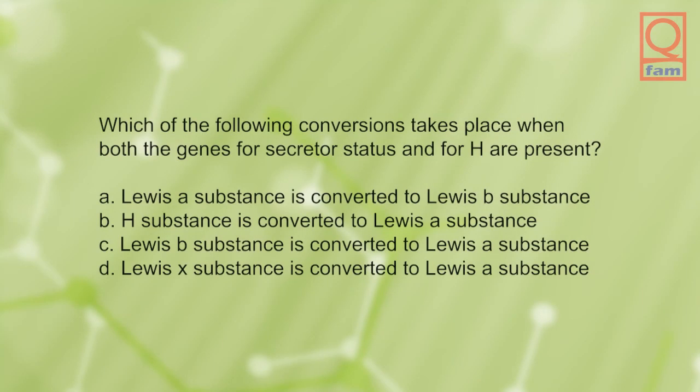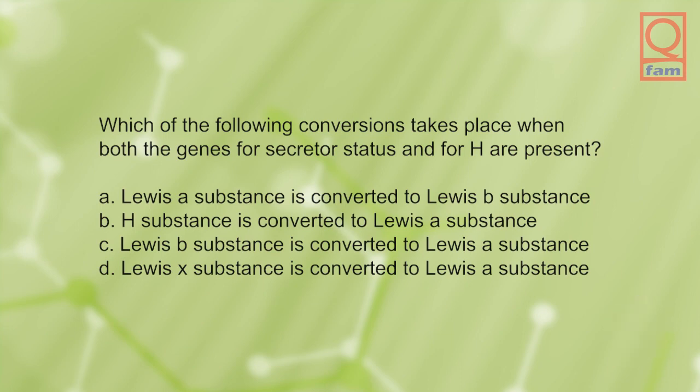Which of the following conversions takes place when both the genes for secretor status and for H are present? A) Lewis A substance is converted to Lewis B substance, B) H substance is converted to Lewis A substance, C) Lewis B substance is converted to Lewis A substance, D) Lewis X substance is converted to Lewis A substance. The answer is A, Lewis A substance is converted to Lewis B substance.